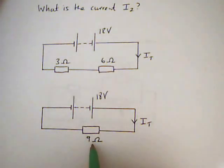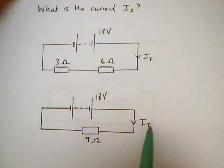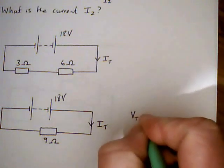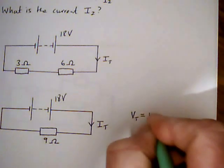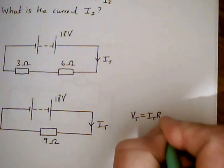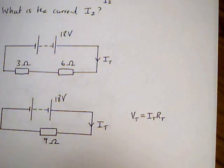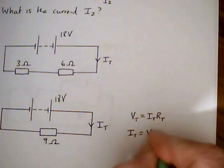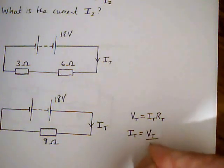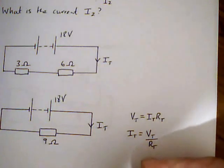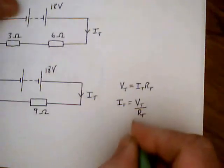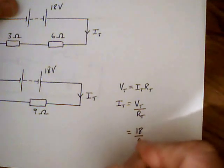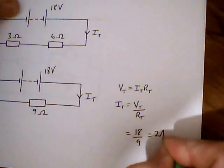Now we've got this value, we can work out the total current of the circuit. Since we know that using Ohm's law, Vt equals It times RT, the total current equals the total voltage over the total resistance, and therefore we've got 18 over 9 equals 2 amps.